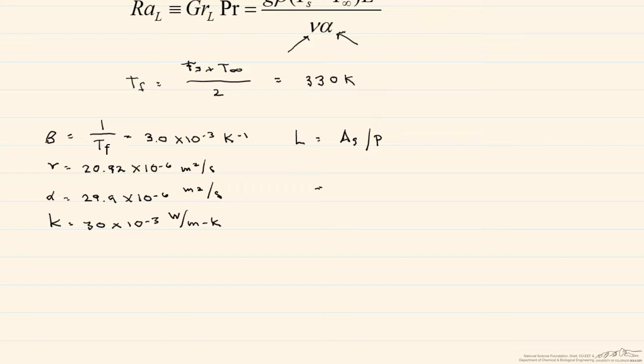So we'll end up calculating that so that L is going to equal 0.3 meters times 0.6 meters divided by our perimeter, which is 2 times 0.3 meters plus 2 times 0.6 meters.